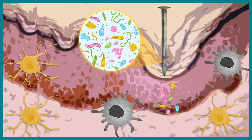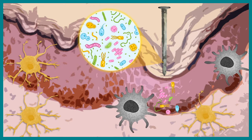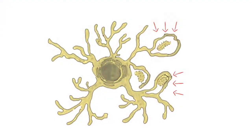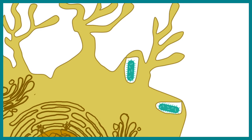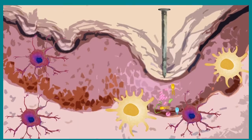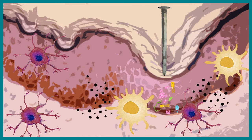When bacteria enter the body, macrophages and dendritic cells just beneath the skin quickly recognize and engulf those pathogens. The dendritic cell engulfs the pathogen, which fuses with a lysosome to form an endolysosome where the pathogen is degraded. The degraded peptides are then displayed on class 2 MHC molecules so they can be presented to T cells. Macrophages and dendritic cells also secrete cytokines to attract nearby cells and call for backup.